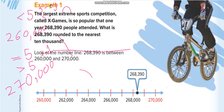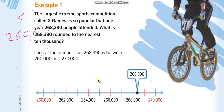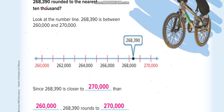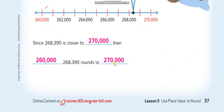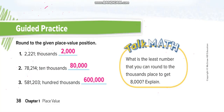The number line also confirms this. Is 268,390 closer to 260,000 or 270,000? Of course it is closer to 270,000. So the answer is two hundred and seventy thousand.